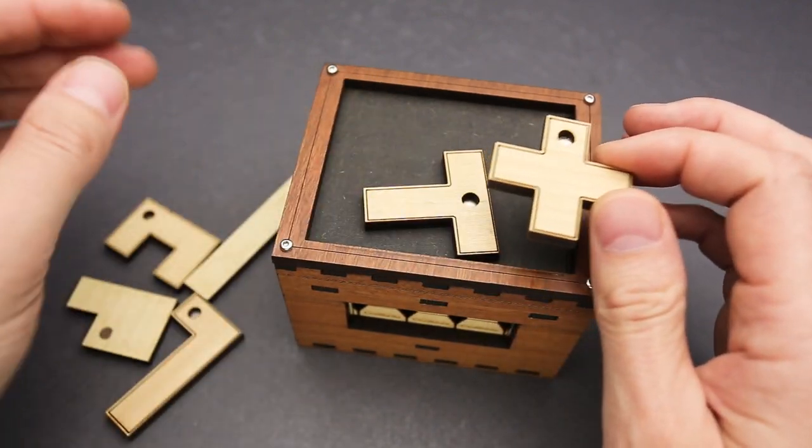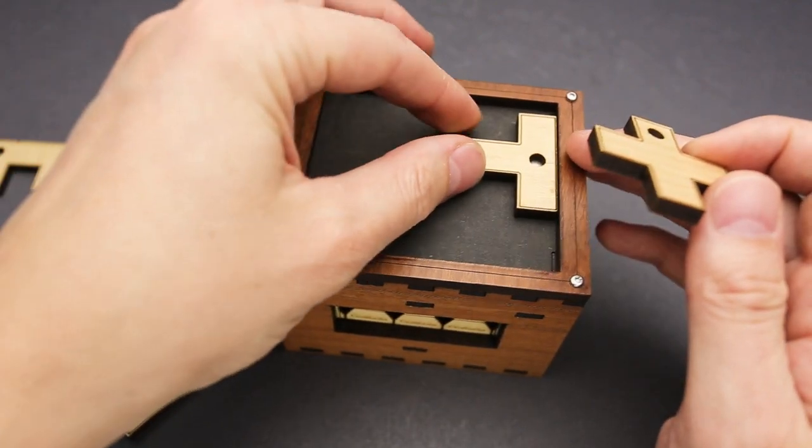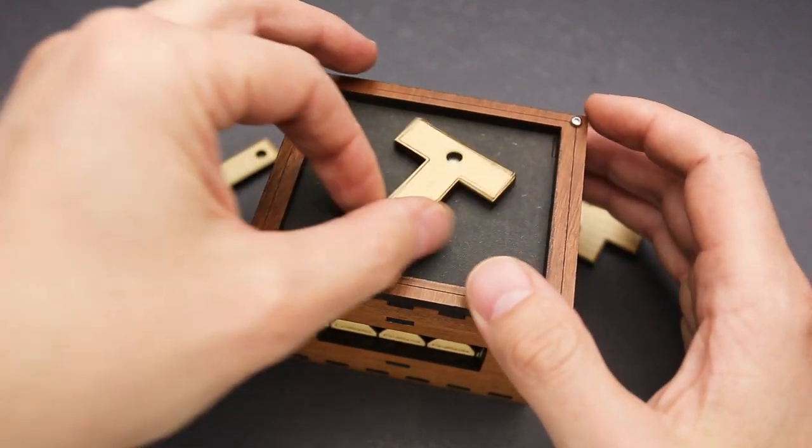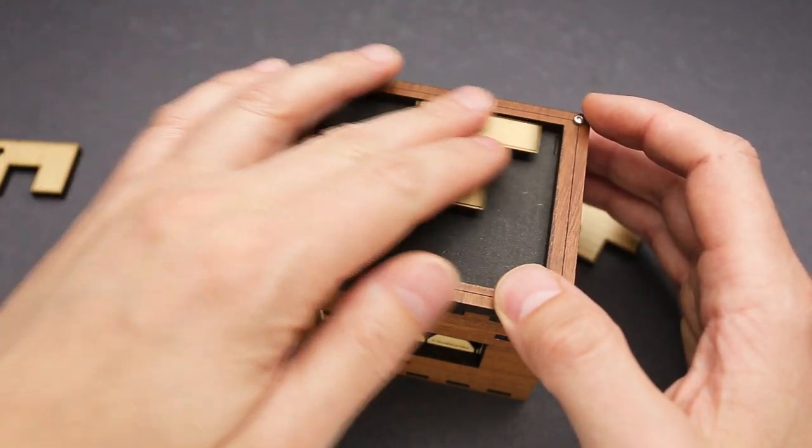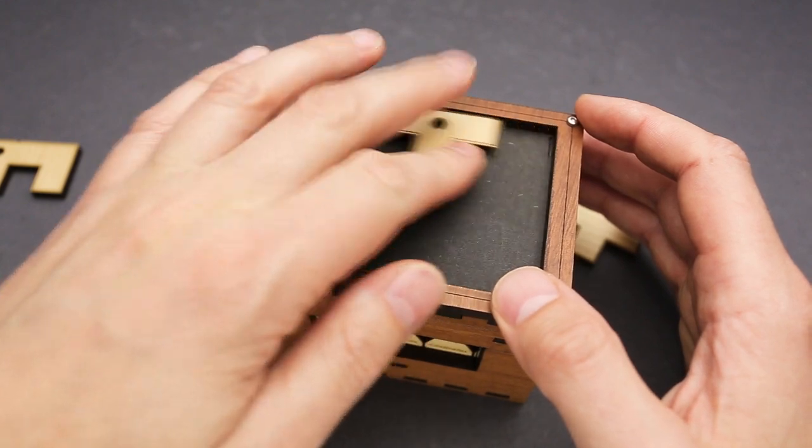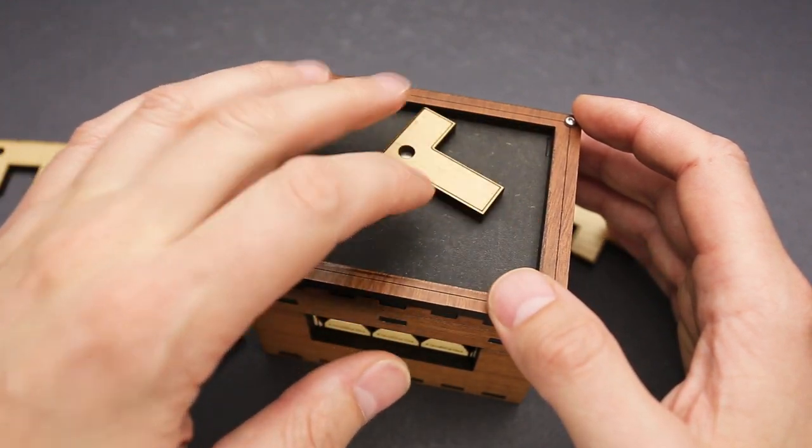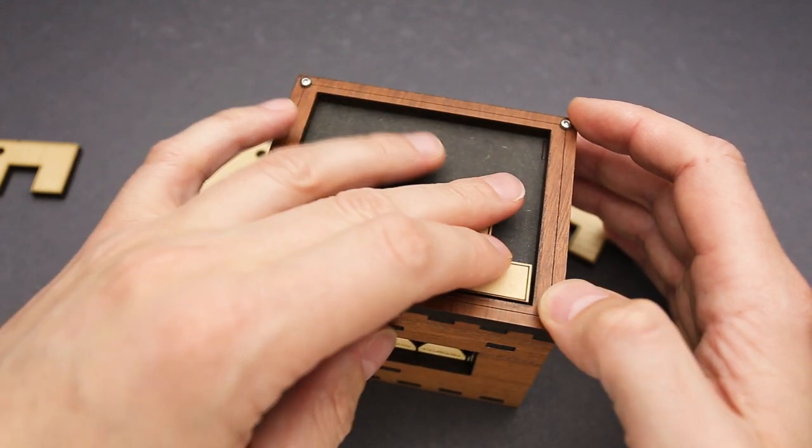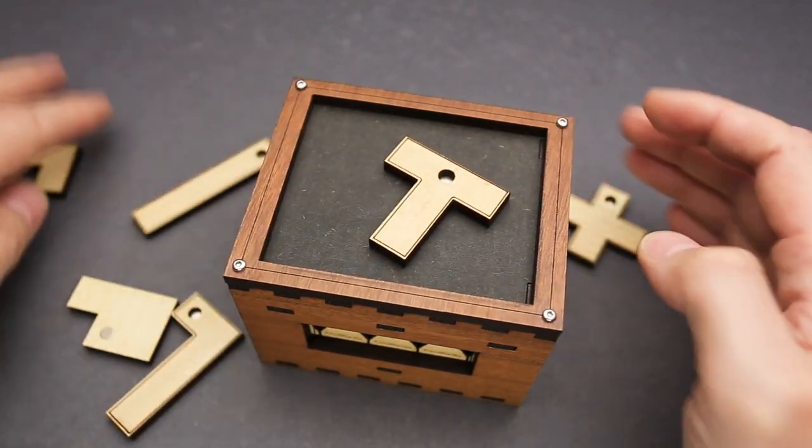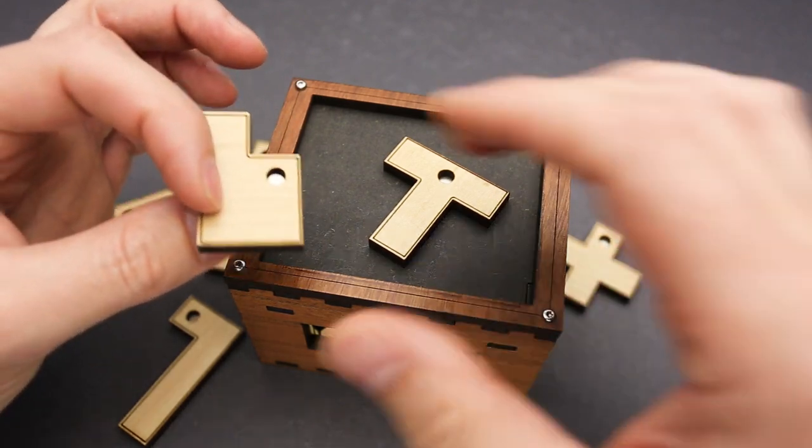And as you can see, each and every piece has a magnet. And there are metal pins inside. One, two, three, four, five, six. Yeah, it looks like there are six metal pins and we have six parts with magnets.